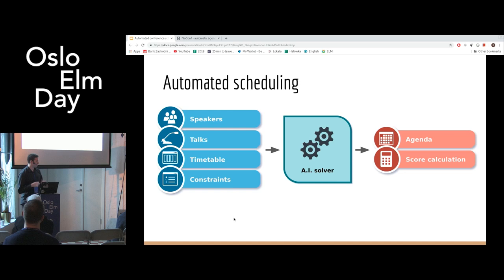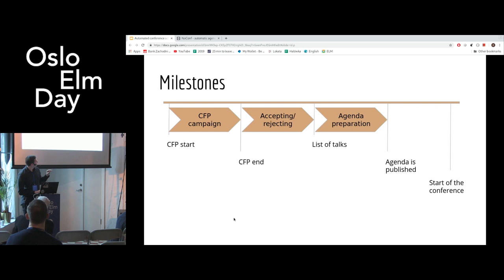But still, having a few hundred talks to assign, even with this nice visualization, is still a very hard task. So let's automate it. NoConf has an AI solver implemented on the backend which will do this job for us. We just press a button and the algorithm takes our data, tries to satisfy requirements first, then optimizes preferences. As a result, we get our agenda with a score calculation and detailed information about what is going on.